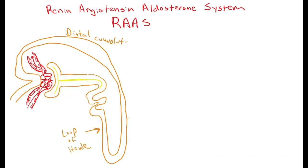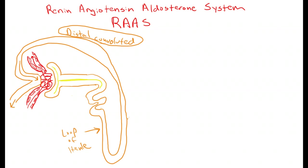What's important to understand — and I haven't made this clear in some of my other videos — is that the distal convoluted tubule, when we draw the model of the nephron we kind of stretch it out, but the nephron is actually very close together. The distal convoluted tubule actually curves back around and ends up coming into contact with the afferent and efferent arterioles before heading out to the collecting duct.